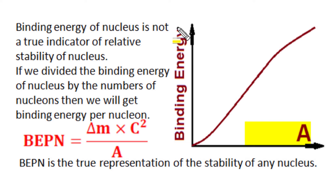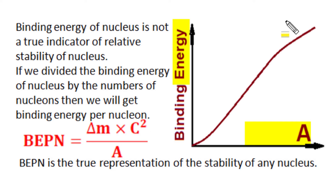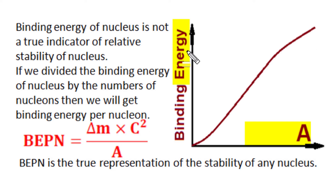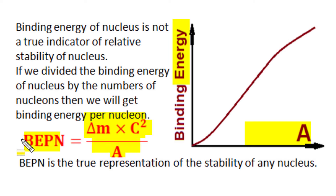Each nucleus has some binding energy that holds all nucleons together. When the mass number of a nucleus increases, its binding energy also increases continuously, with a relatively higher rate between mass number 20 and 200. Every addition of a neutron or proton results in additional mass defect and increased binding energy. Since binding energy alone is not a true indicator of stability, we divide it by the mass number to obtain binding energy per nucleon: total mass defect multiplied by c² gives total binding energy, and dividing by mass number gives binding energy per nucleon.